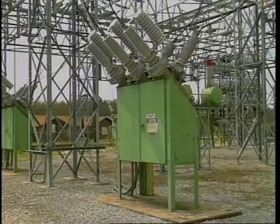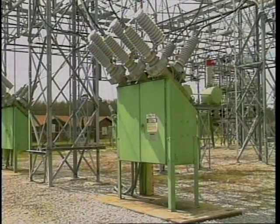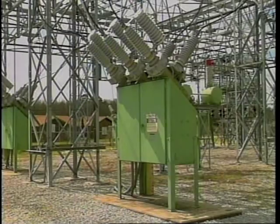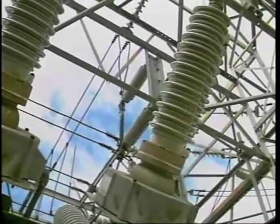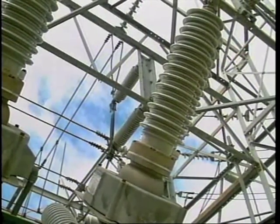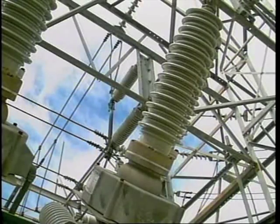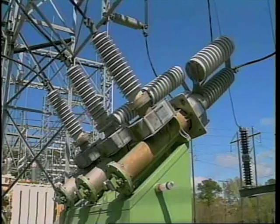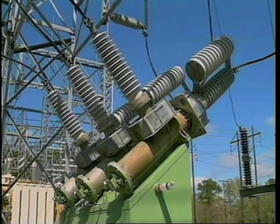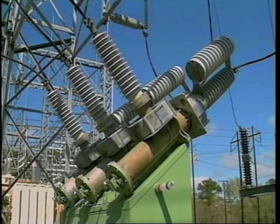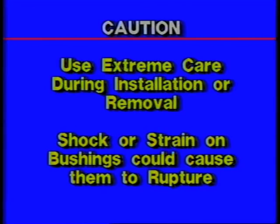The bushings in sulfur hexafluoride circuit breakers are designed with their porcelain center exposed to the main breaker tank, which is filled with SF6 gas. Since the porcelain is under low pressure, the gas will flow outward in the event of a pinhole crack. This will preserve the insulating qualities of the bushing until repairs can be made. The main purpose of the bushing is to provide an electrical path from the breaker to the connecting bus. Some bushings may be insulated with sulfur hexafluoride gas. If the bushings contain sulfur hexafluoride gas, extreme care must be exercised during installation or removal. Any shock or strain on the bushings could cause them to rupture.